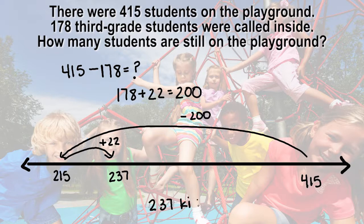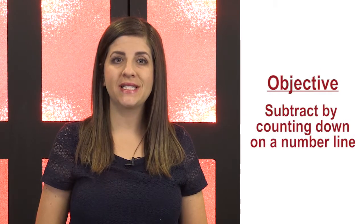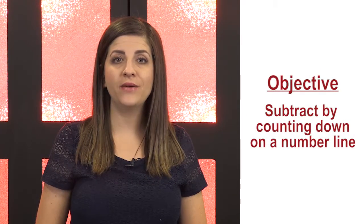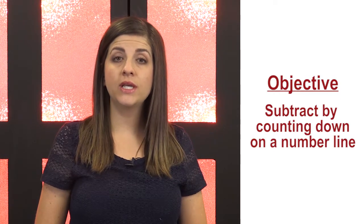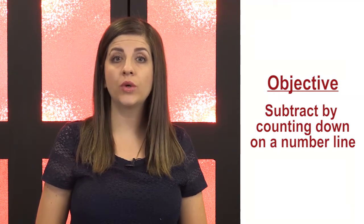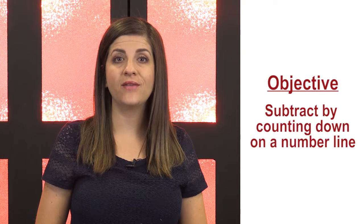There are a wide variety of ways to subtract, and students should be encouraged to share their thinking. When students learn to be flexible with numbers, they are able to decompose and compensate quantities and have a greater understanding for solving real-world problems. The objective for this lesson was to subtract by counting down on a number line. We met this objective by using an open number line to model real-world subtraction problems in a variety of ways.